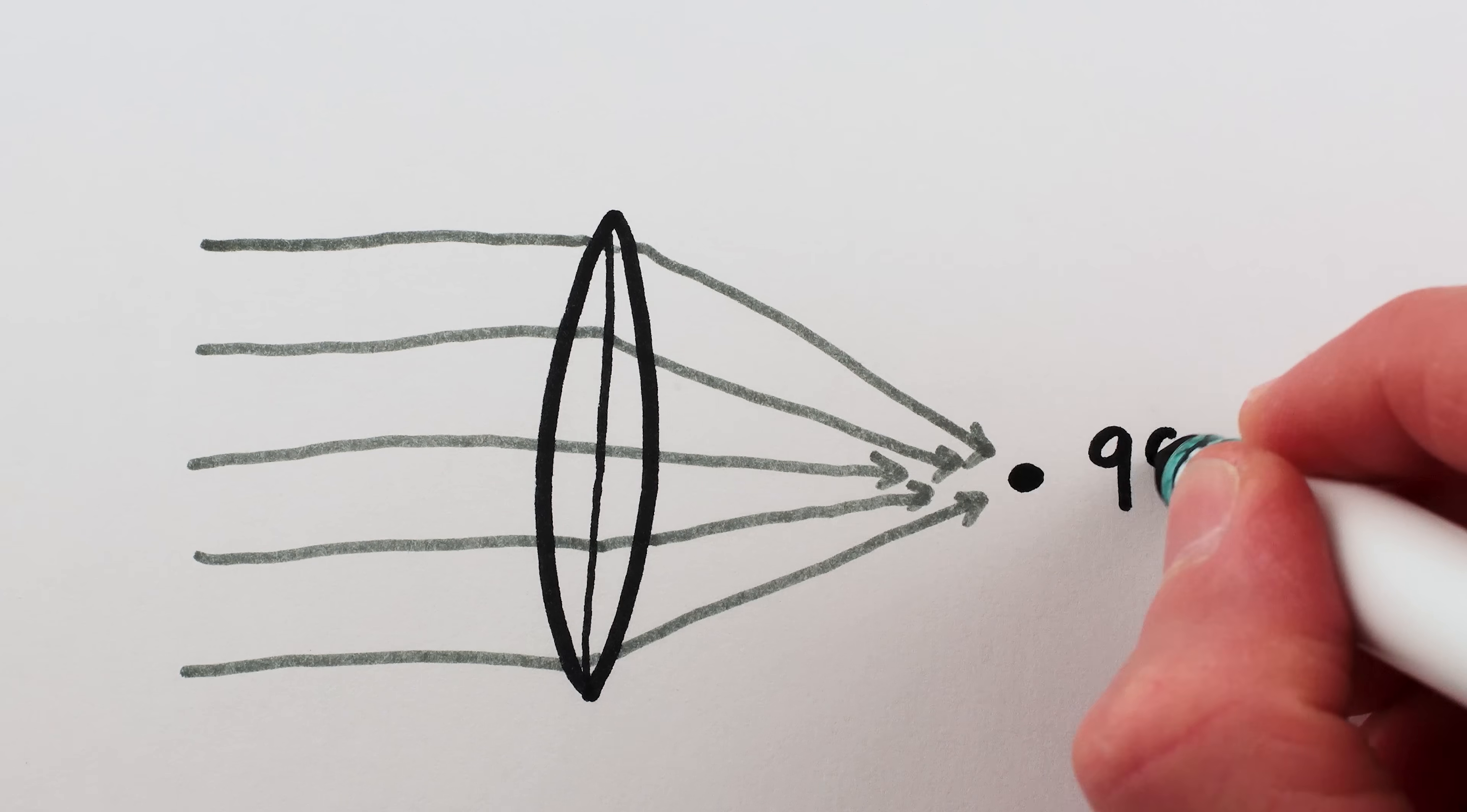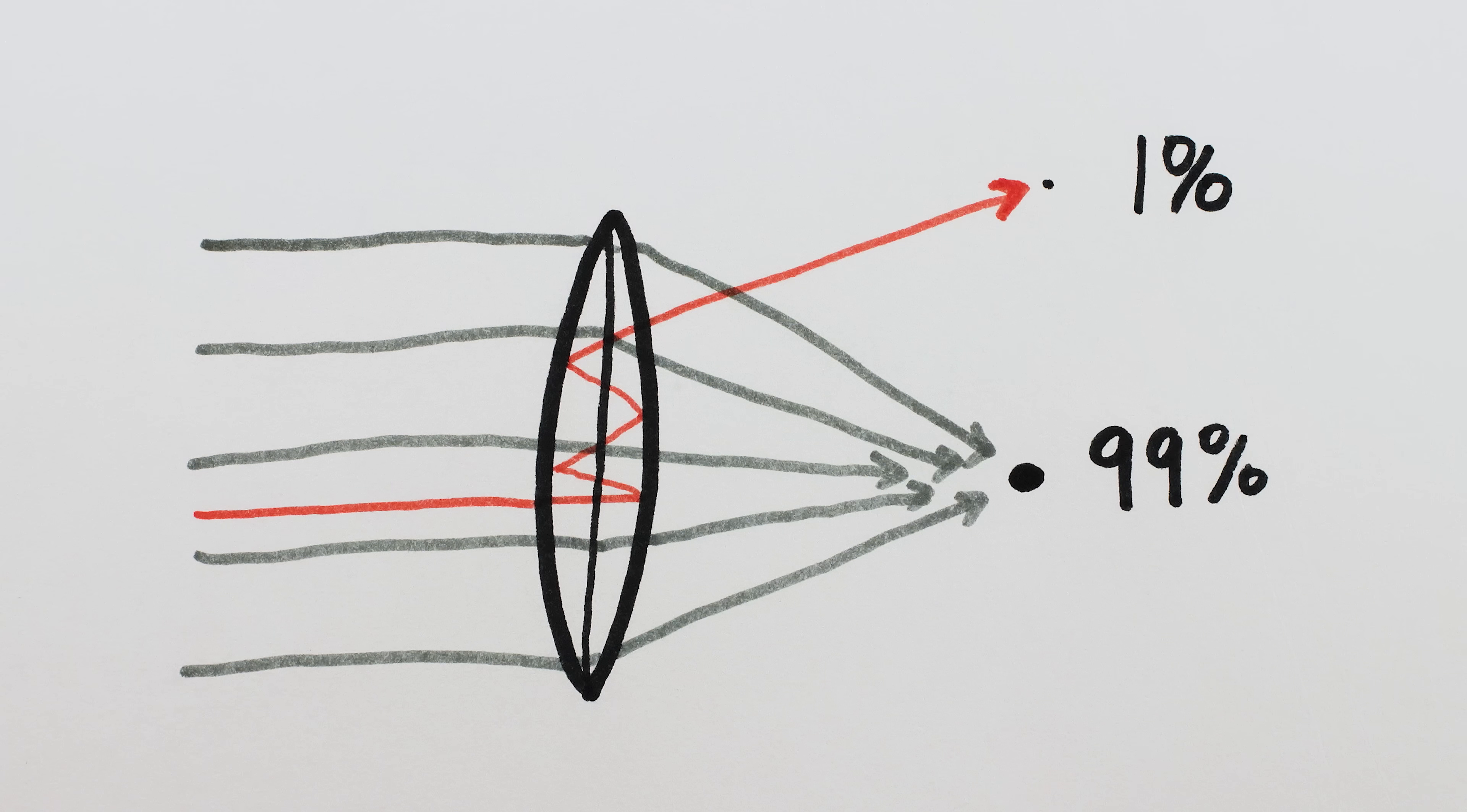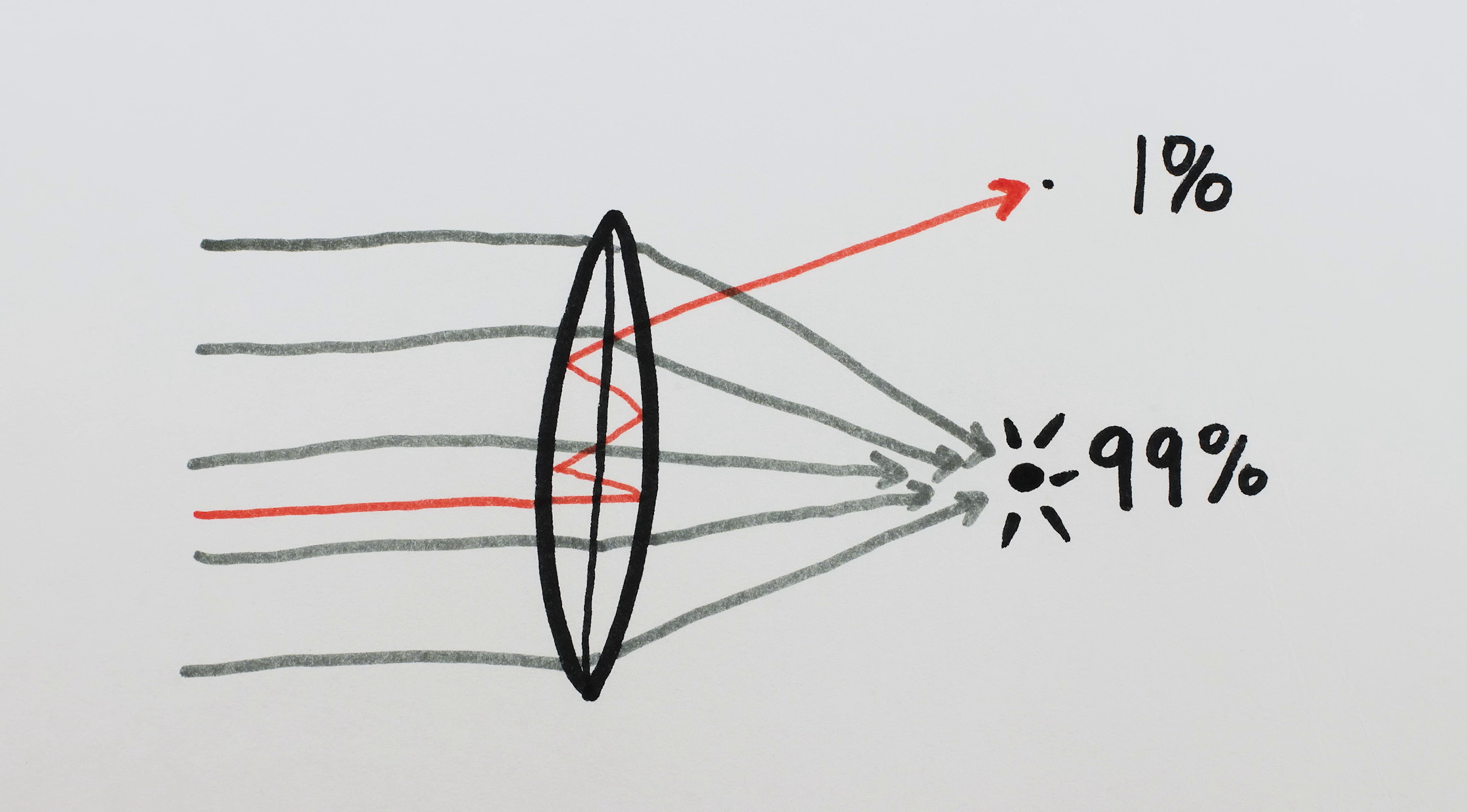It's all about relative brightness. If, say, 99% of light passes correctly through a lens element, and only 1% of it bounces around and causes a lens flare, then that flare is at most 1% as bright as the correct light, and you probably won't notice it in the final image.